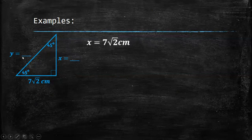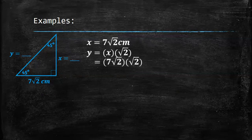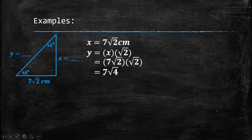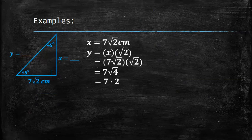Next, to find the hypotenuse, the formula is shorter leg times square root of 2. Substituting, we have 7√2 times √2, which gives us 7 times square root of 4. Since square root of 4 is equal to 2, we have 7 times 2, which is 14. So our hypotenuse is 14 centimeters.